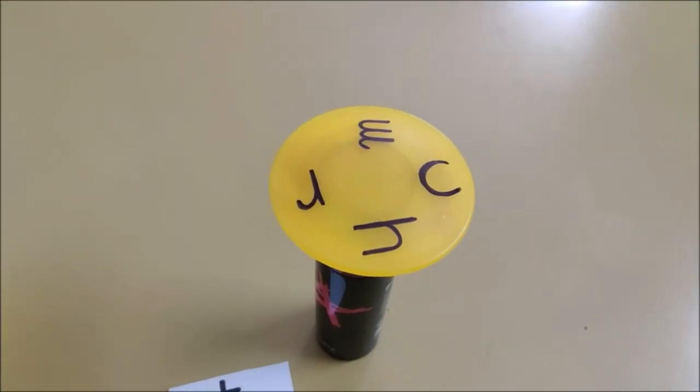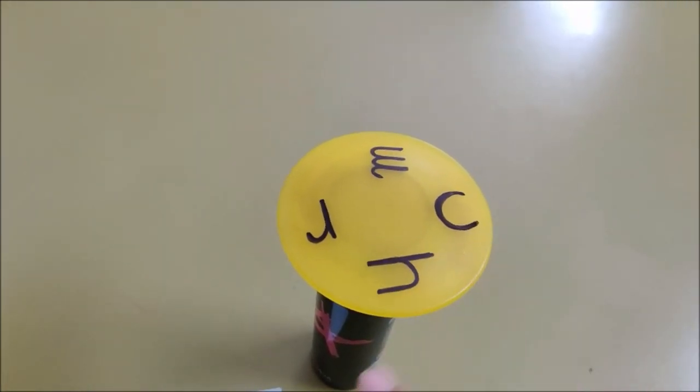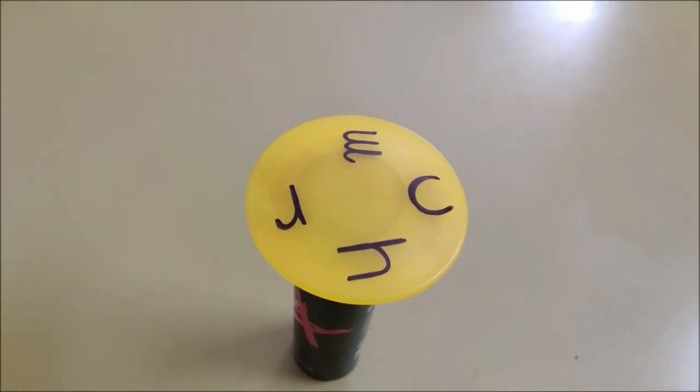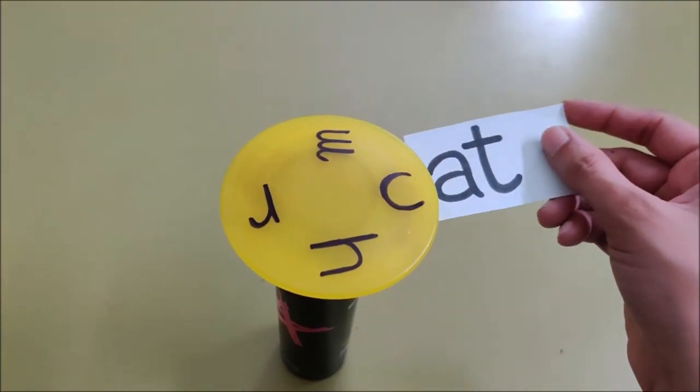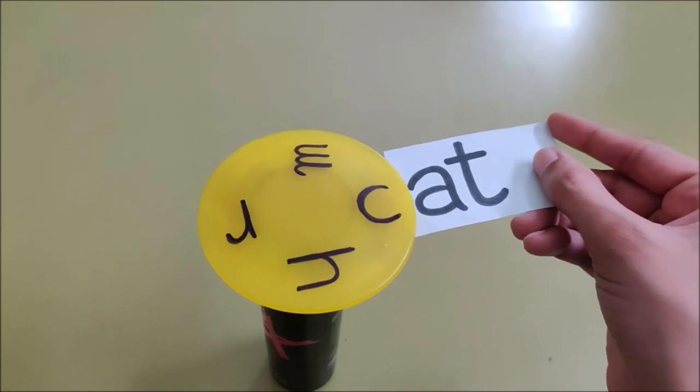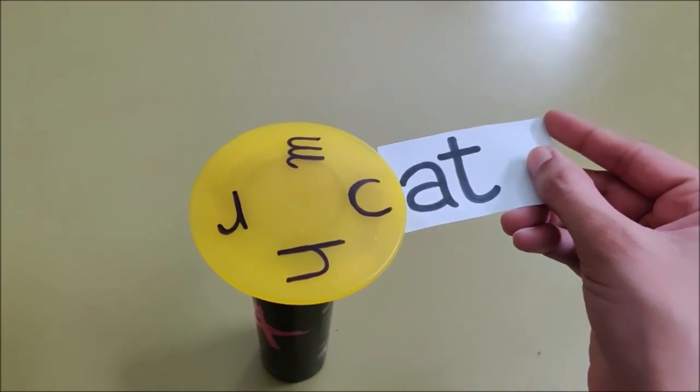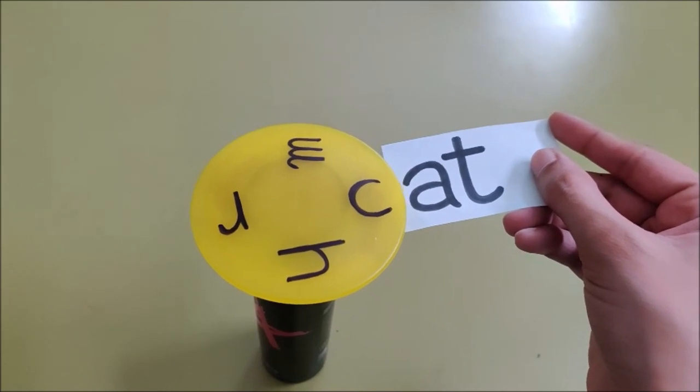Spin. After spinning, see children, what letter have I got here? C. I am going to join my 'at' with C. Now what is the word, children? C, A, T, Cat.